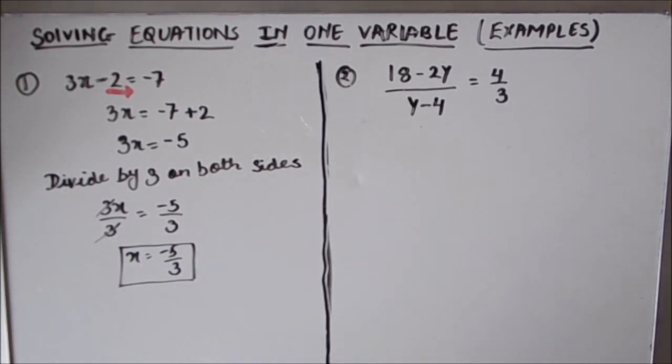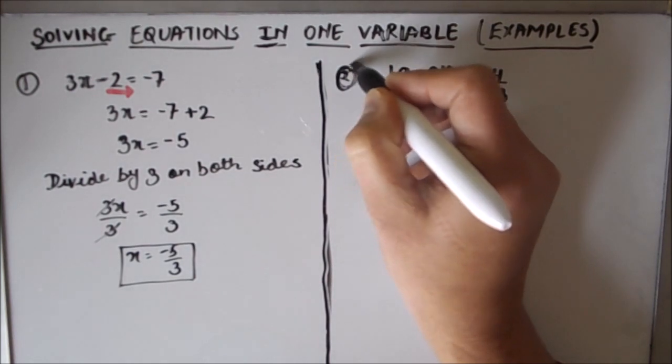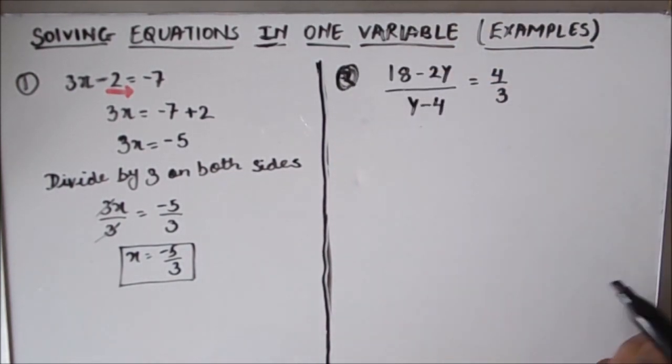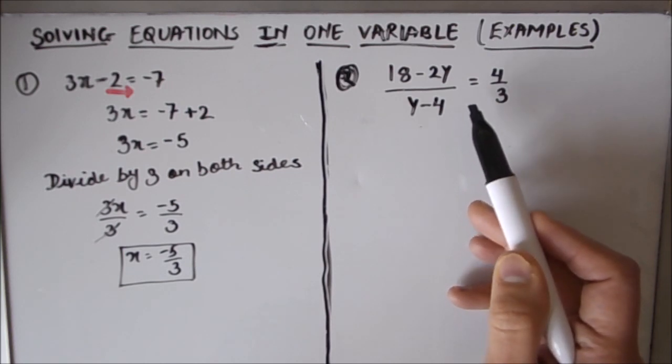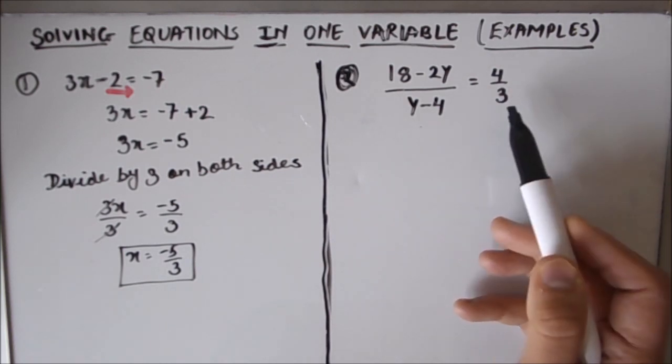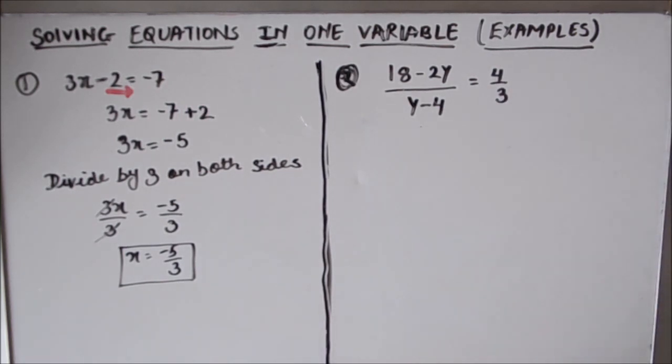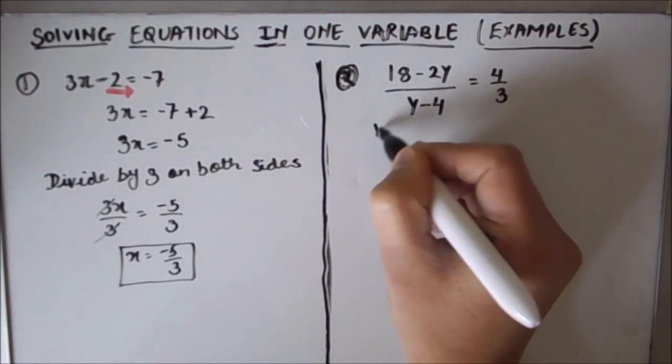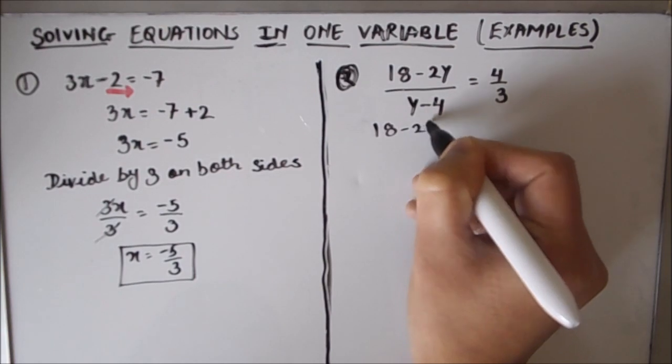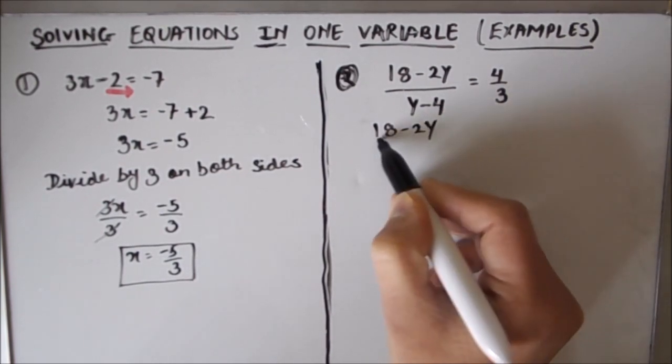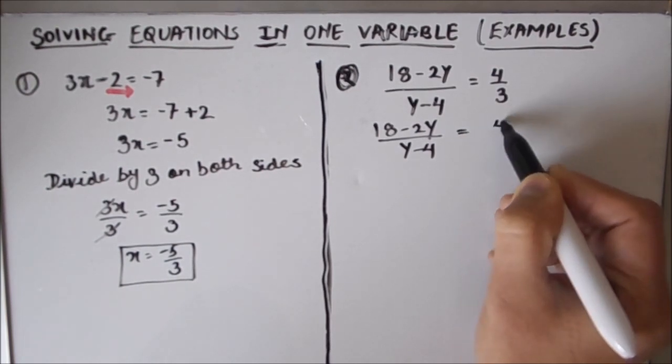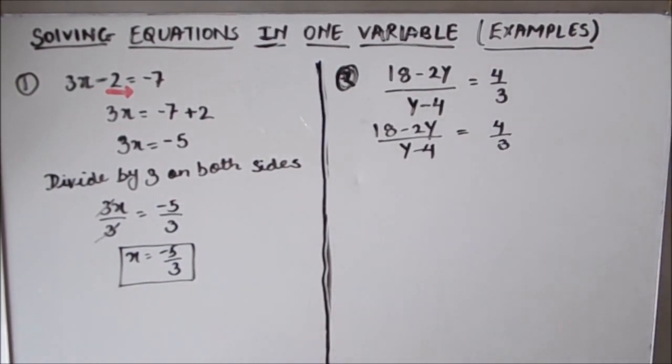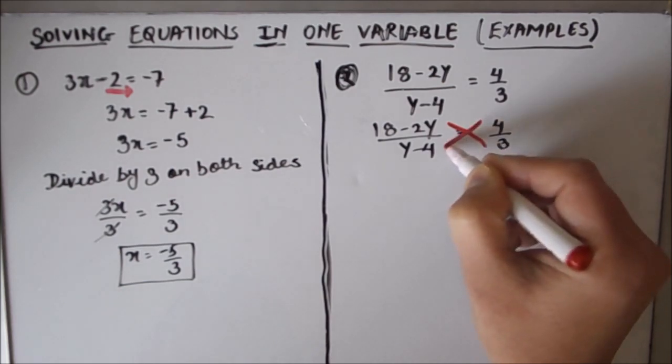Now there is a second example which is a bit bigger and a complex one. If you have this type of equation, then the first step is to cross multiply. So 18 minus 2y over y minus 4 equals 4 over 3. So we will cross multiply here.